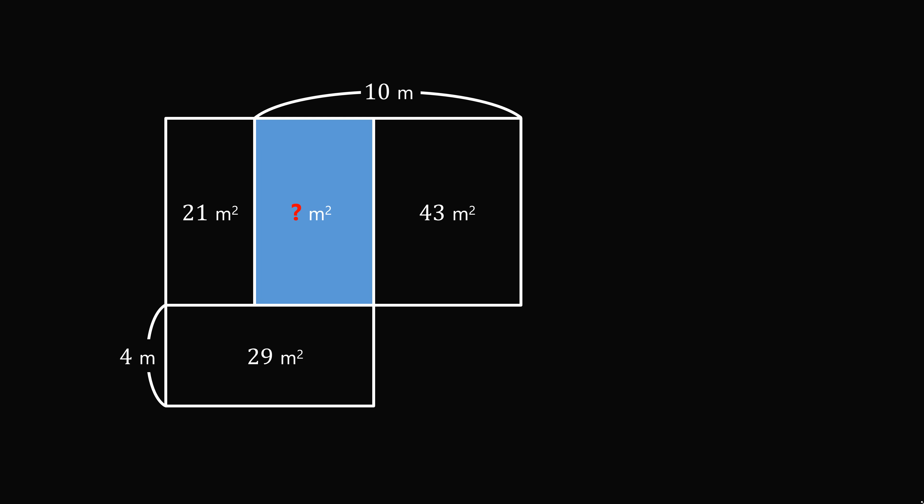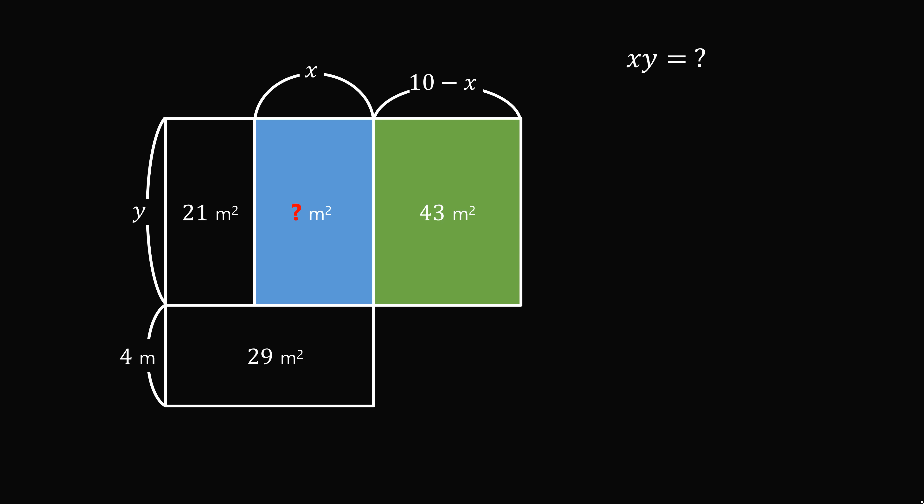Let's say the second rectangle has a width that's equal to x, and a height that's equal to y. Since the second and third rectangles together have a width equal to 10, the third rectangle's width is equal to 10 minus x. Our goal is to solve for the area of the second rectangle, which is equal to x times y.